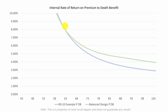The same thing happens on the death benefit. You can see the 90-10 starts out higher, but then about 20-21 years in, they switch places — and again, the death benefit is more efficient in the long run for the balanced policy.